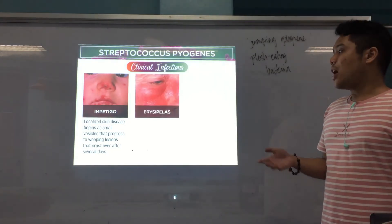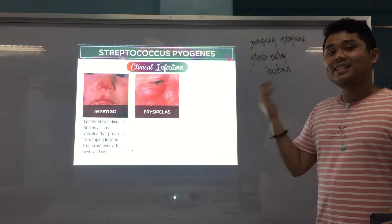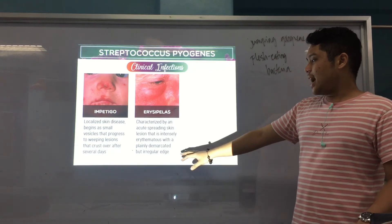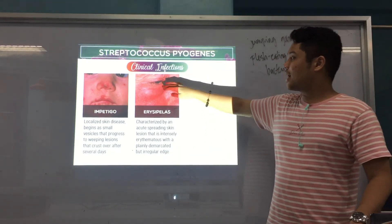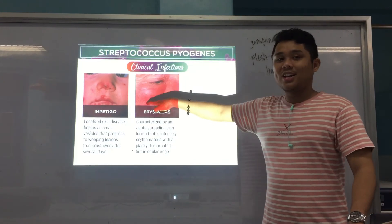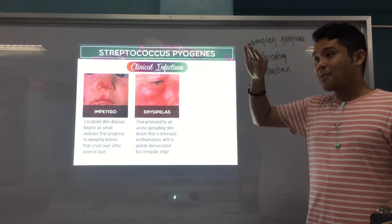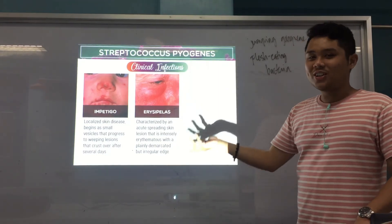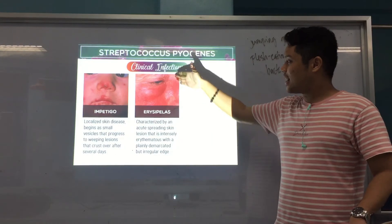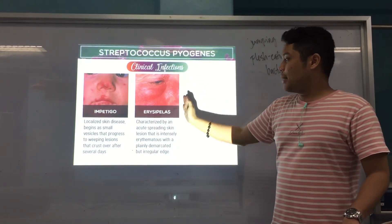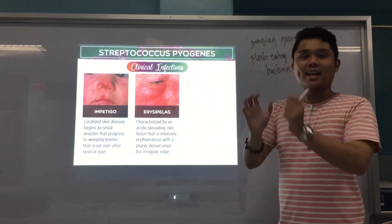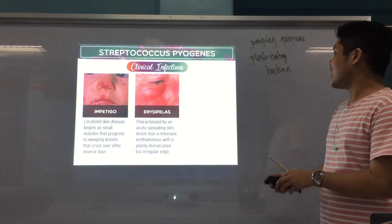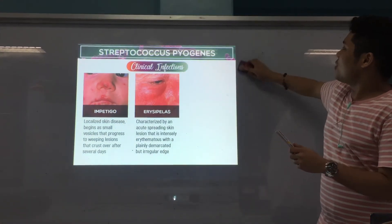Erysipelas is an erythematous (red) skin infection with a demarcated but irregular edge — meaning there is a boundary, but the edge is irregular and not smooth. This is a distinguishing characteristic of erysipelas caused by Streptococcus pyogenes.